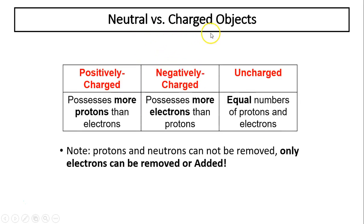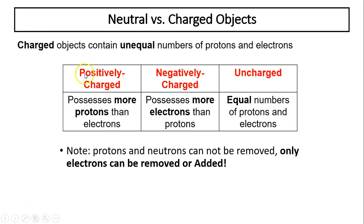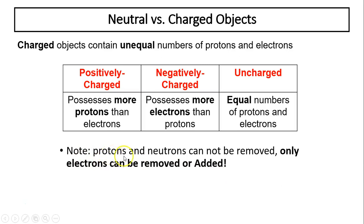The difference between neutral and charged objects: if an object has more protons, it is positively charged. If it has more electrons, it is negatively charged. If the number of protons and electrons is the same, the object is neutral. Protons and neutrons cannot be removed — only electrons can be removed or added.